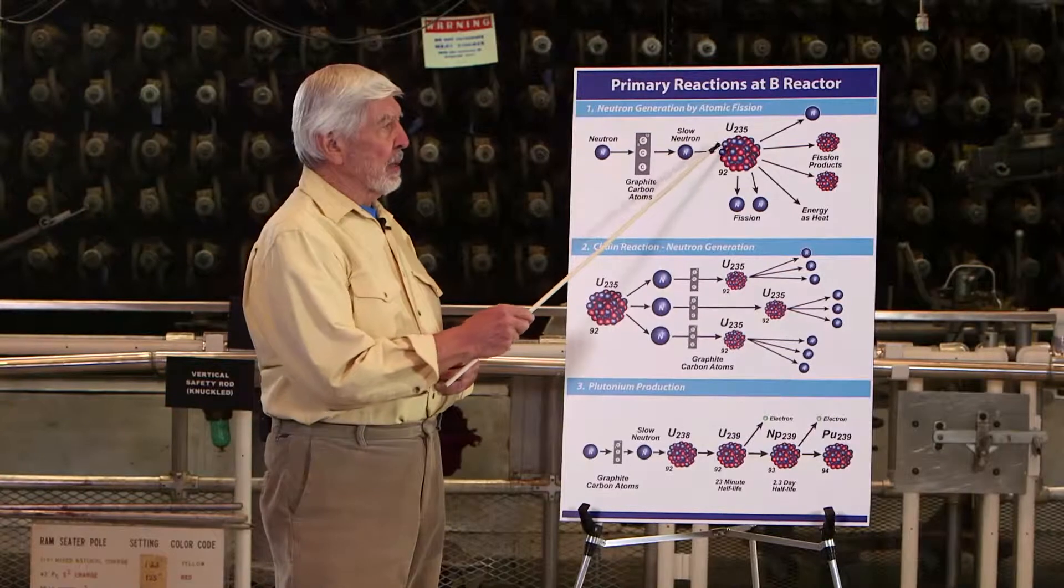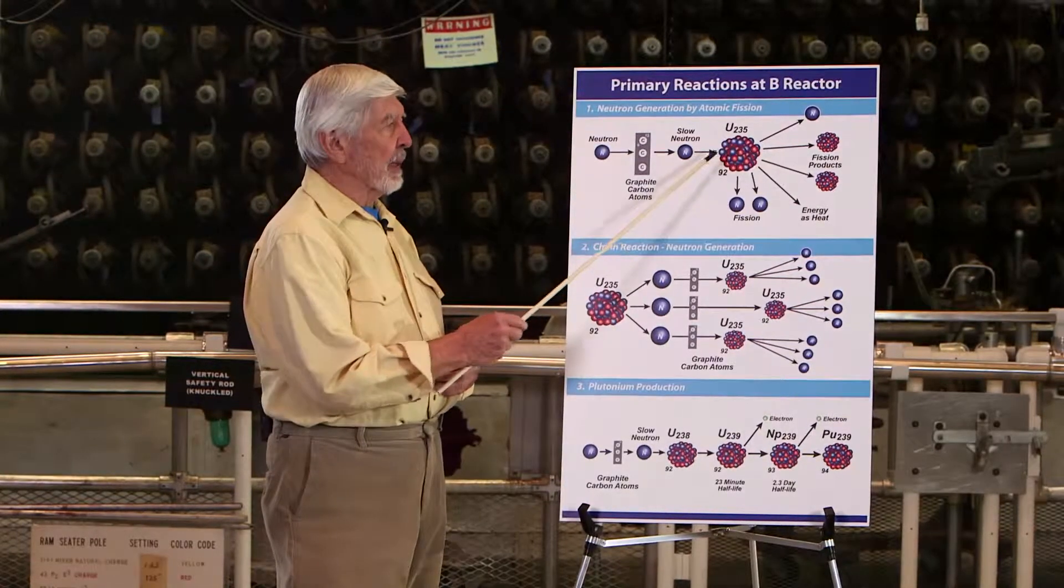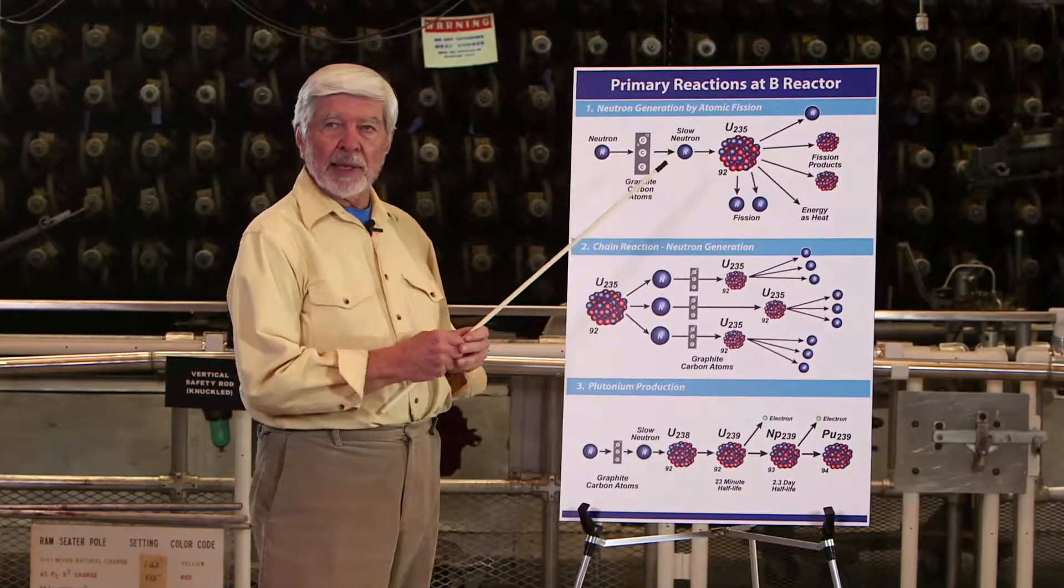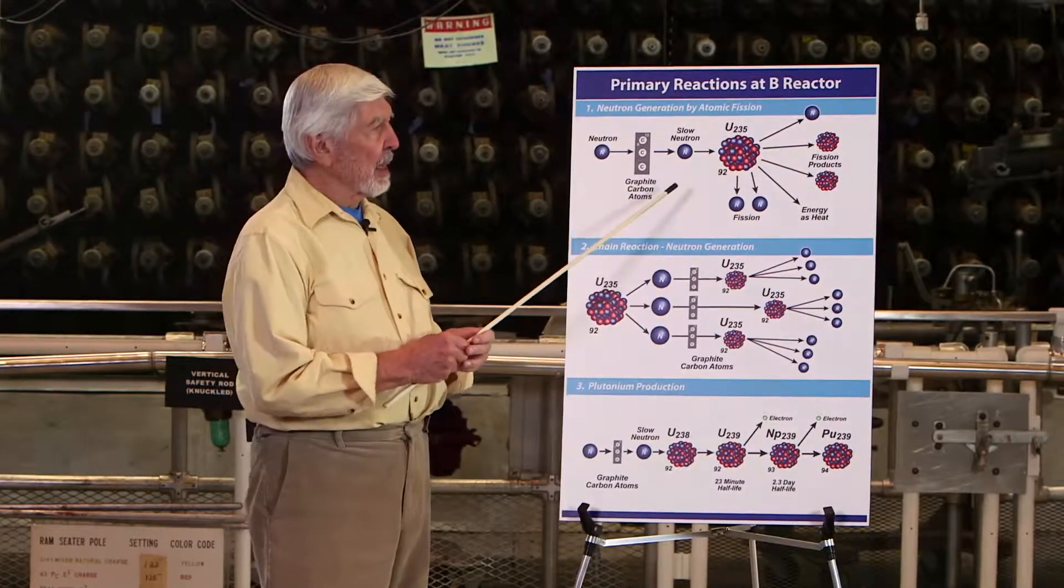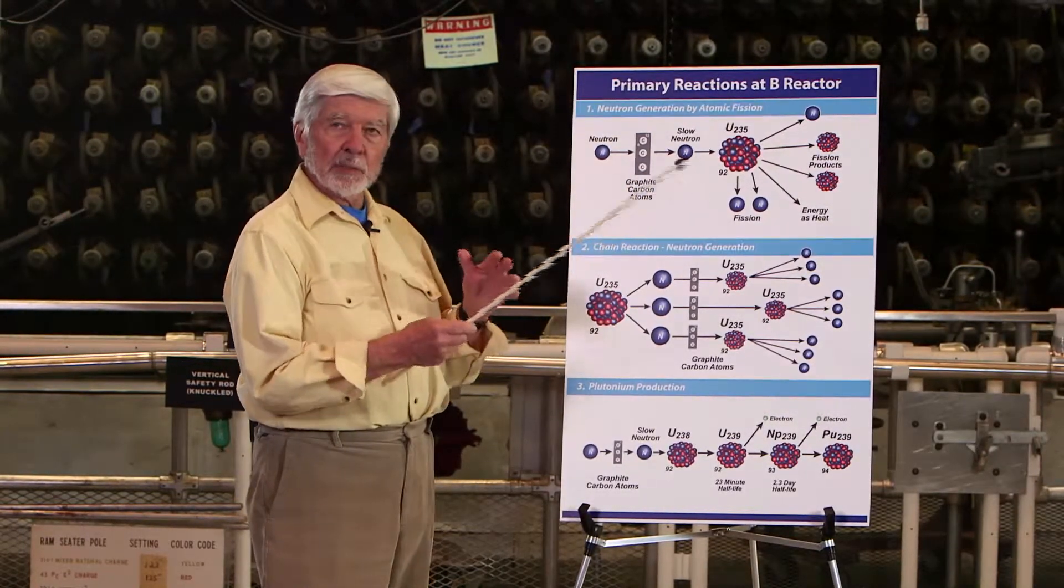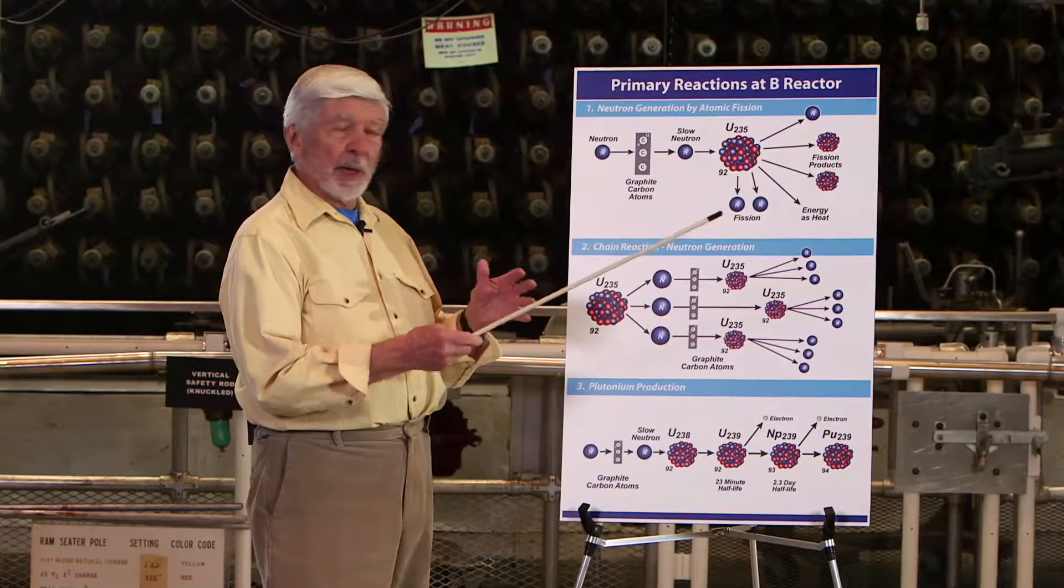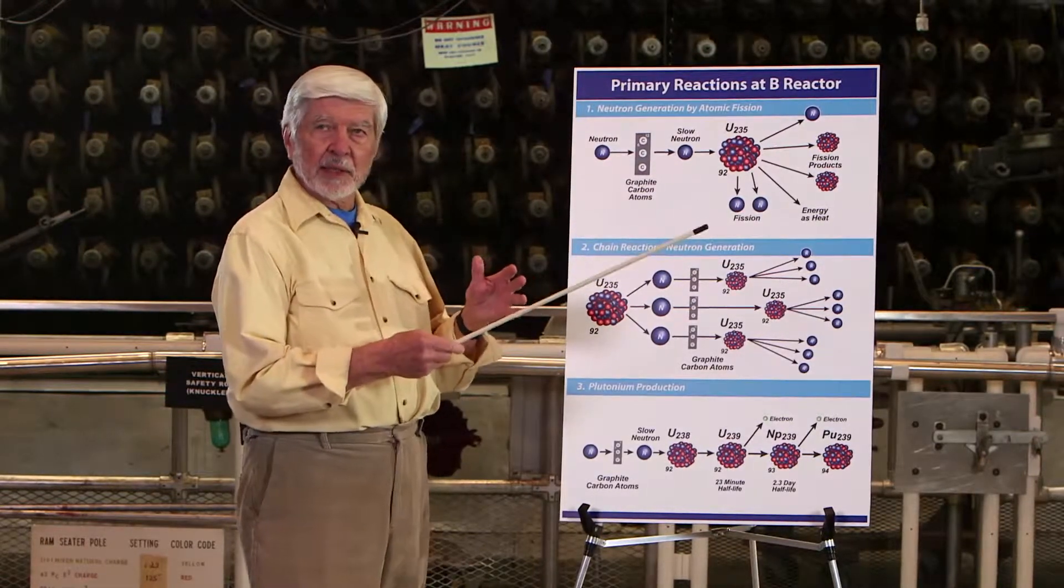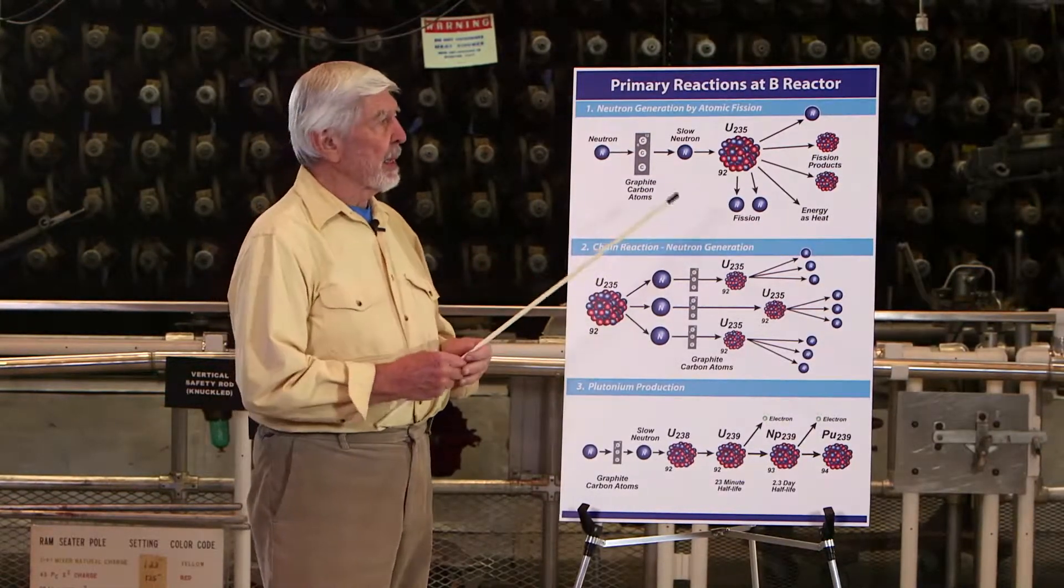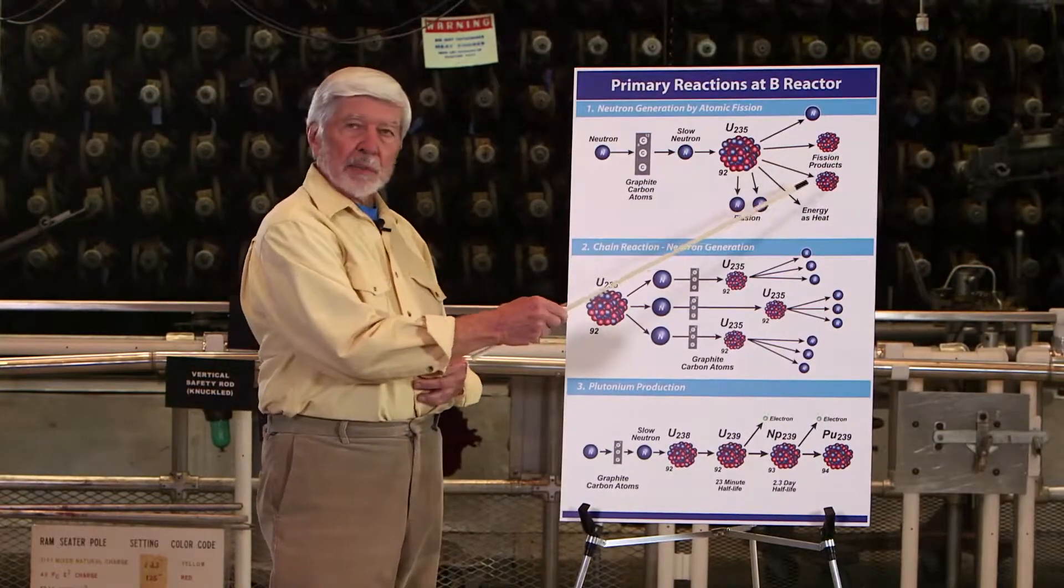When the U-235 atom accepts the slow neutron, three important things happen. It breaks into two smaller atoms, always two atoms, not necessarily the same pair. These atoms are called fission products.